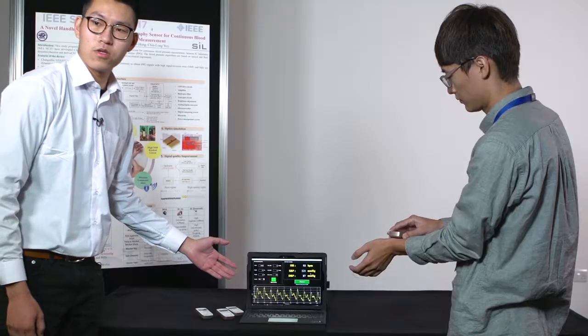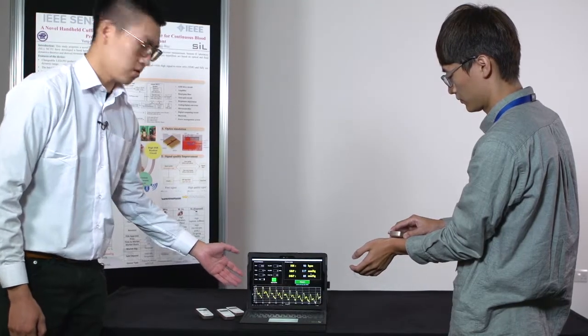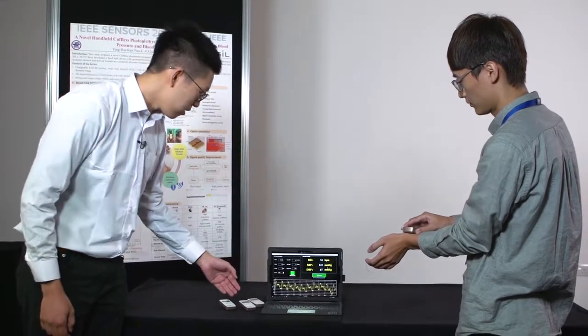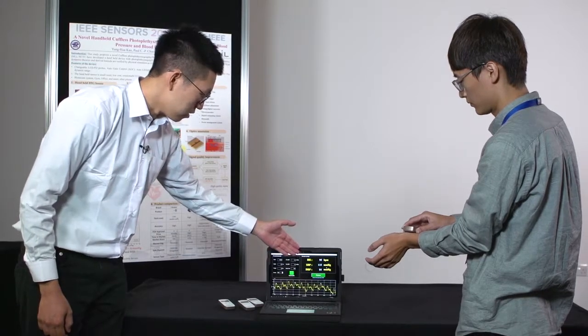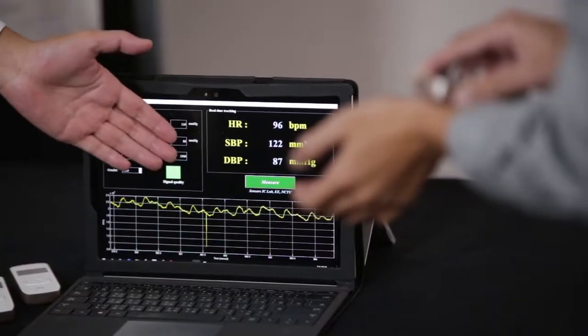So the PPG signal is shown on the screen. And then here is the heart rate and SBP, DBP.